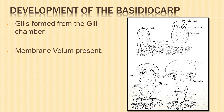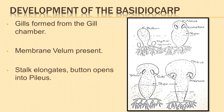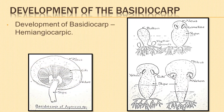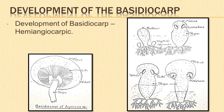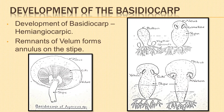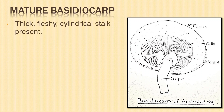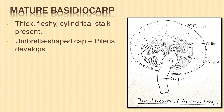The margin of the button is connected with the stalk by a membrane called the vellum or inner veil. The stalk elongates and the button projects above the soil, opening into an umbrella-like structure called the pileus. The vellum on the lower surface of the pileus ruptures, exposing the hymenium in the gills. Development of the basidiocarp is hemi-angiocarpic — the hymenium is at first enclosed but at maturity it gets exposed. Remnants of vellum remain in the form of a ring on the stipe, known as the annulus.